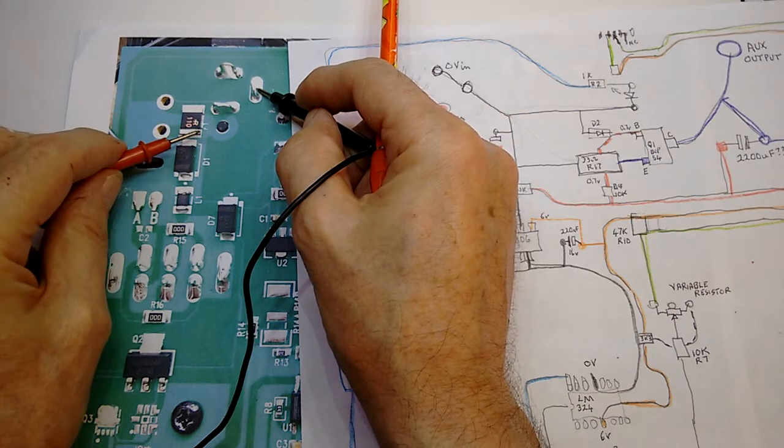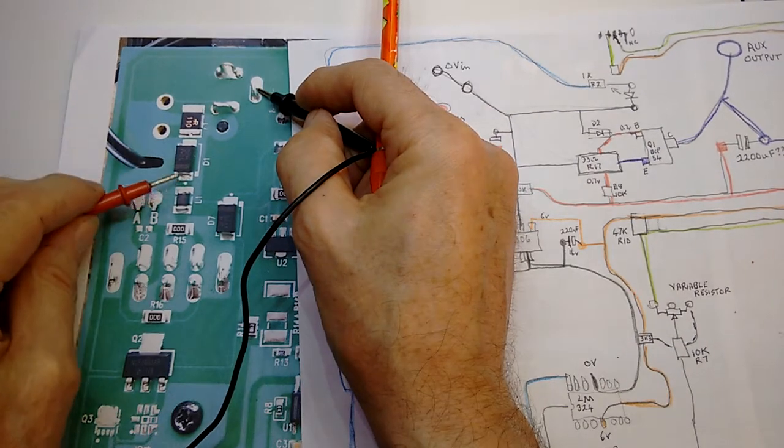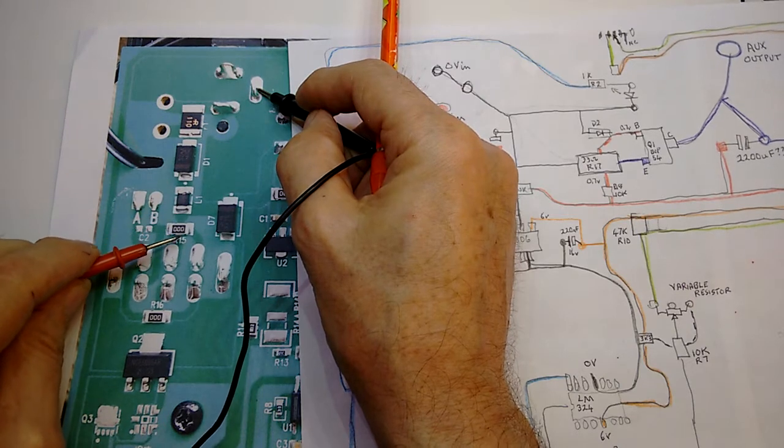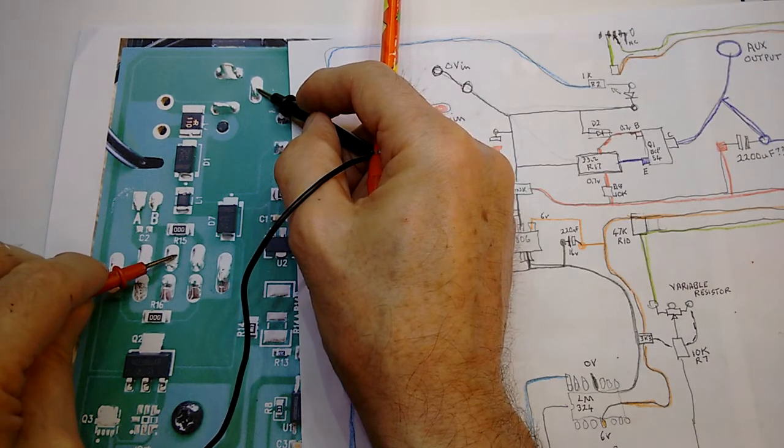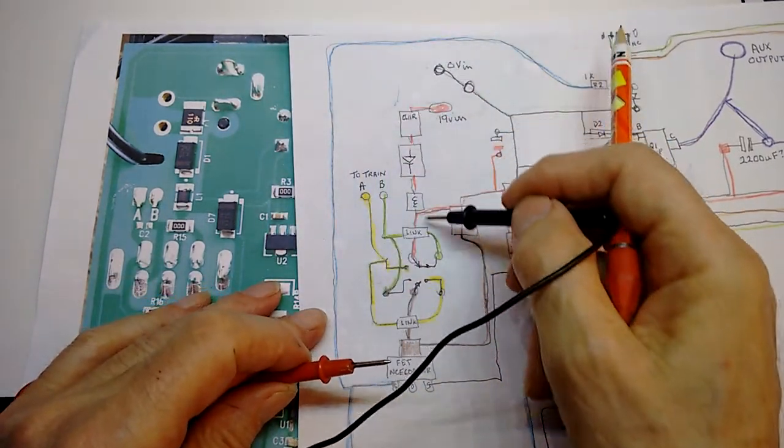I can then come down and check each of these to check that I've got a voltage all the way down. It won't be 19 volts, it'll be somewhere around but not 19 volts. So that's what I've tried to show on this diagram.